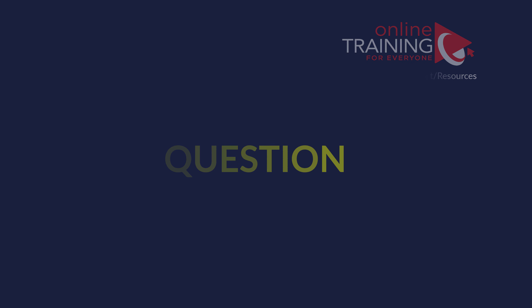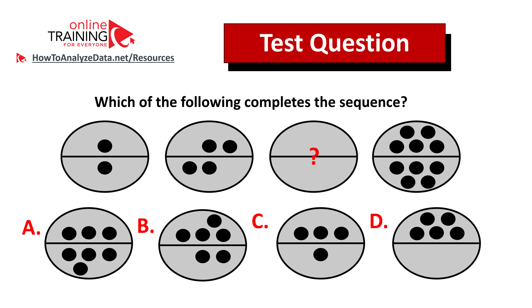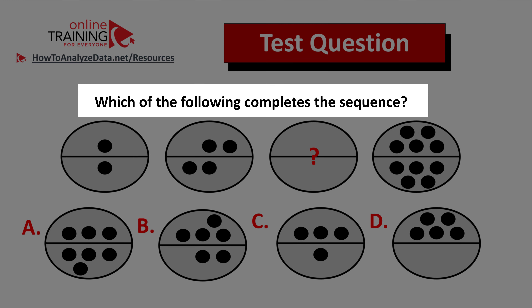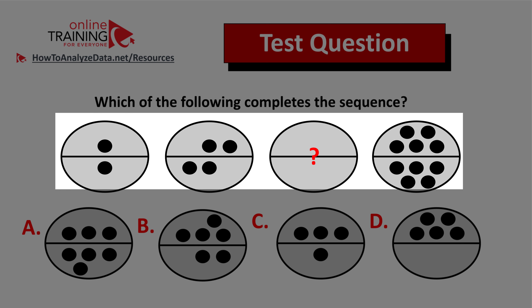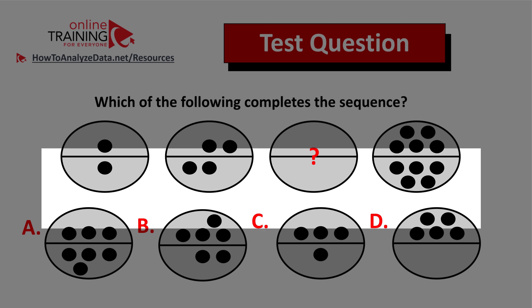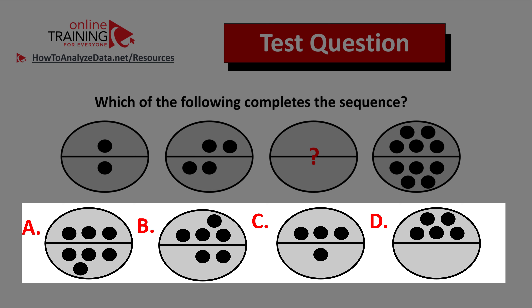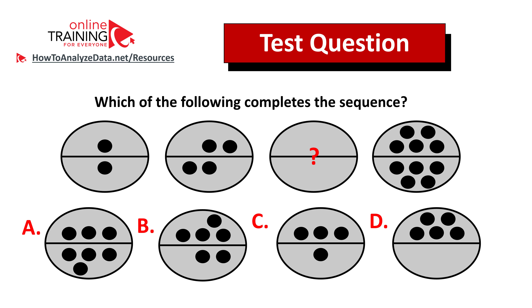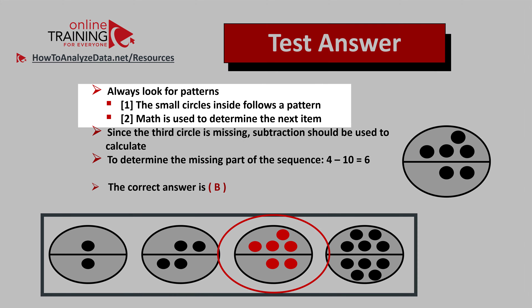Let me share with you a tricky question which tests your analytical and pattern recognition skills. Which of the following completes the sequence? You're presented with a sequence of four ovals and the third one is missing. You have four different choices: A, B, C, and D. All choices show similar ovals, just with dots located in different places. Take a look carefully — spend 10 to 15 seconds looking at this question. Did you figure out the answer? Let's get to the correct solution together.